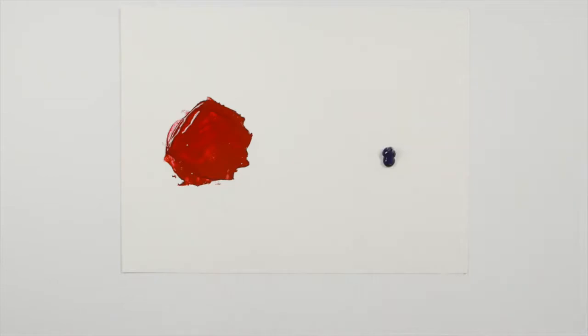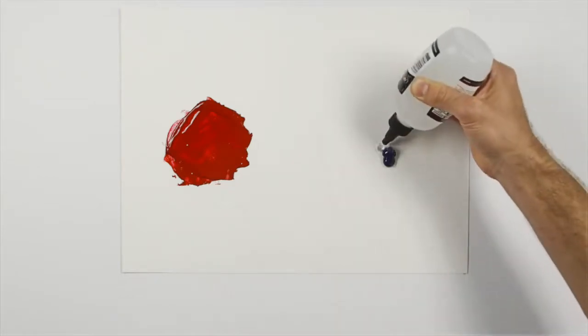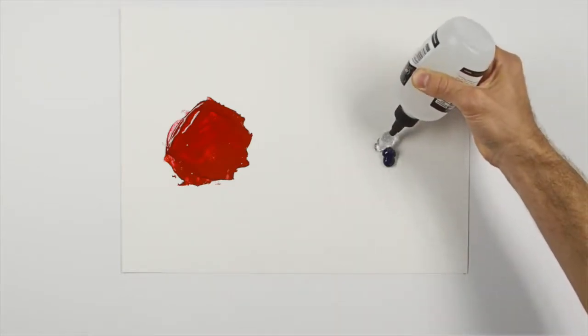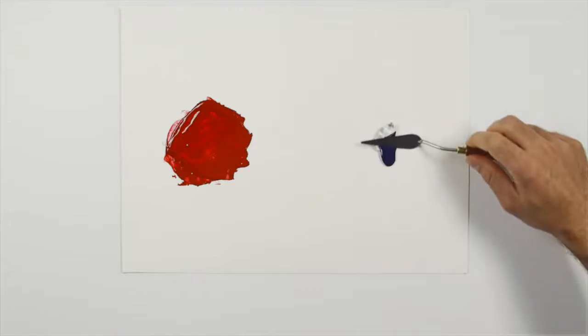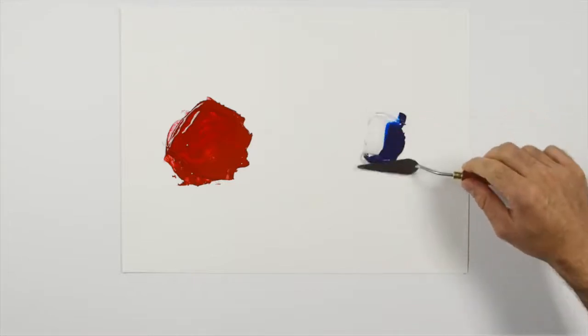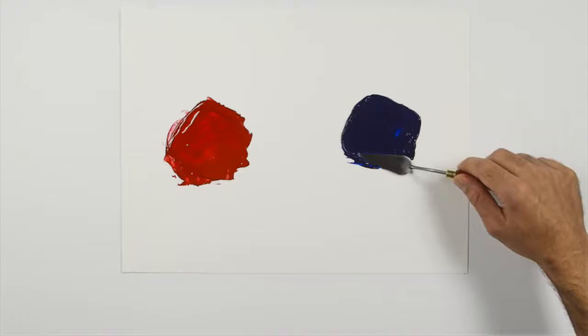I'm going to mix two colours separately with slow drying medium. This medium will slow the acrylic's drying rate to give me more working time. It will also change the consistency of the paint, allowing one colour to flow into another.